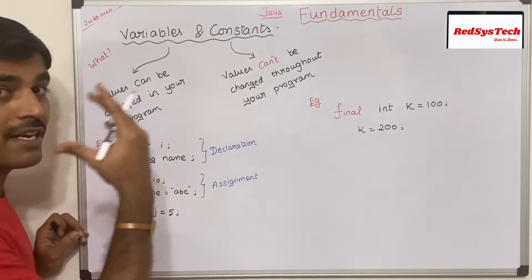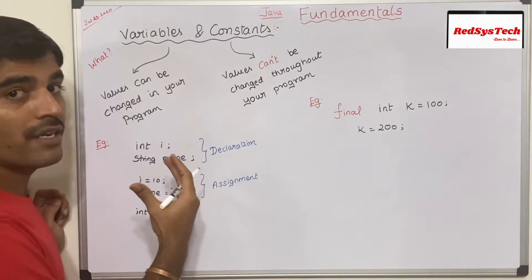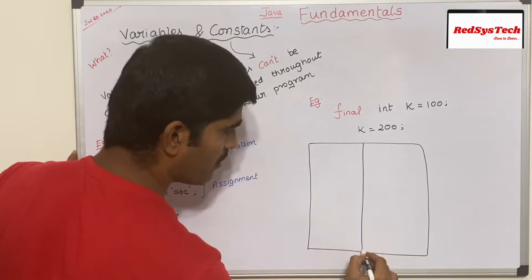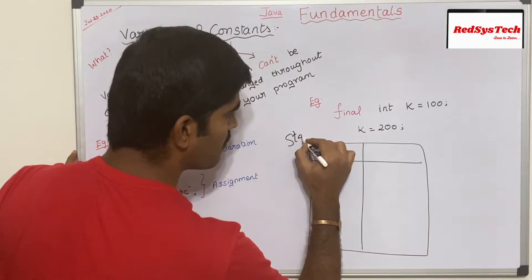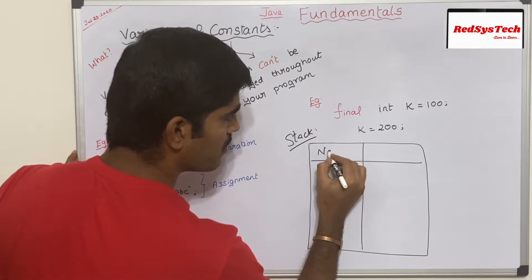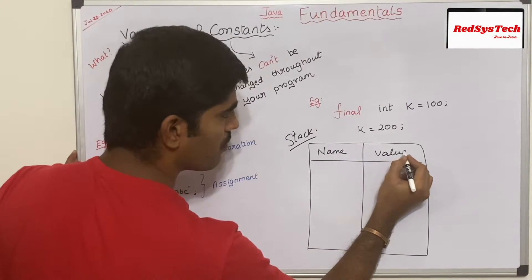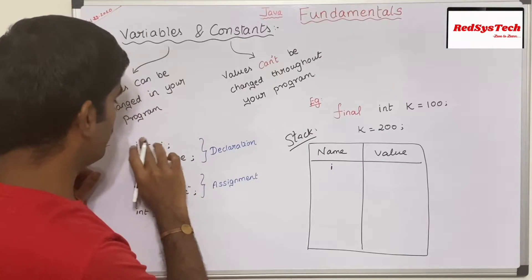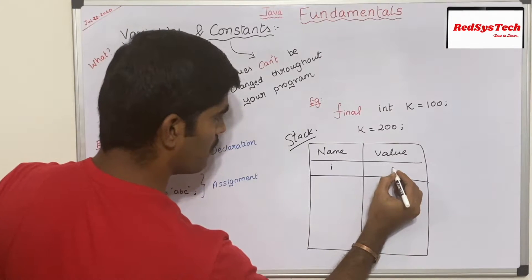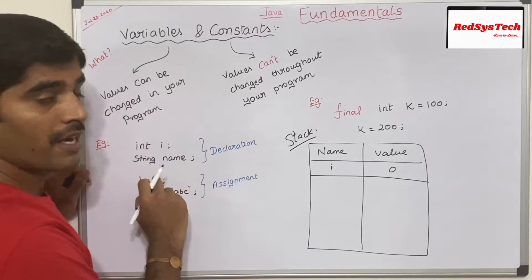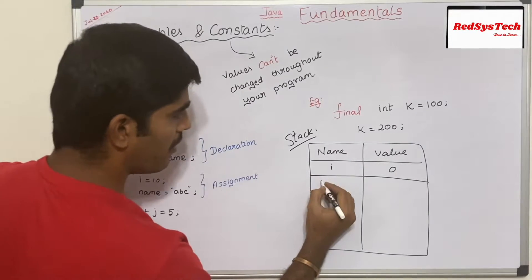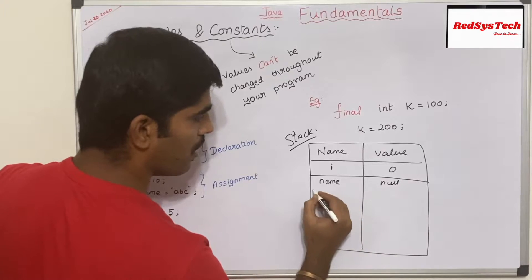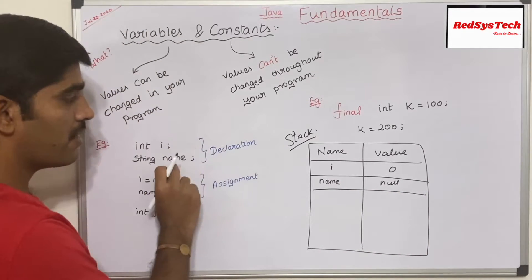So how does it look like in real-time memory? All the variables are stored in stack memory. Stack is nothing but internal memory which has a name and value. Here the name will be `i`, and by default the value won't be set — it will be 0, because of the `int` type. And for `String name`, the name of this variable is `name` and the default value will be null.